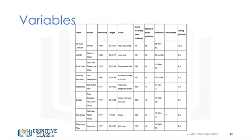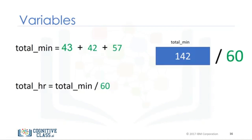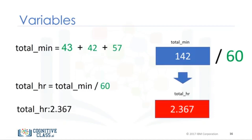Let's say we would like to convert the number of minutes in the highlighted examples to number of hours in the following music dataset. We call the variable that contains the total number of minutes, total_min. It's common to use the underscore to represent the start of a new word. You can also use a capital letter. We call the variable that contains the total number of hours, total_hour. We can obtain the total number of hours by dividing total_min by 60. The result is approximately 2.367 hours.